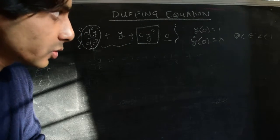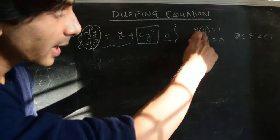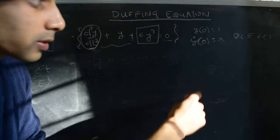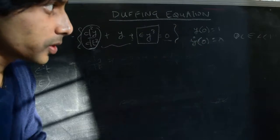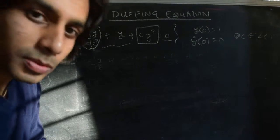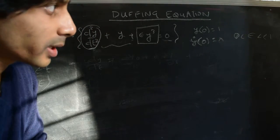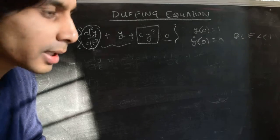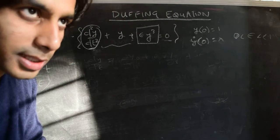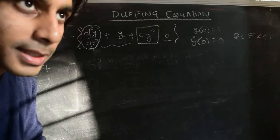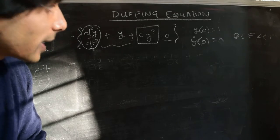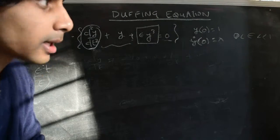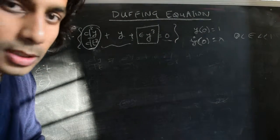We solve this subject to the initial conditions: y at time t=0 is 1, and the first derivative of y at t=0 is 0 — we'll use the dot notation for the derivative. Here epsilon is some small positive parameter, much less than 1 and greater than 0. This is a nonlinear differential equation because of the presence of the term epsilon y³.